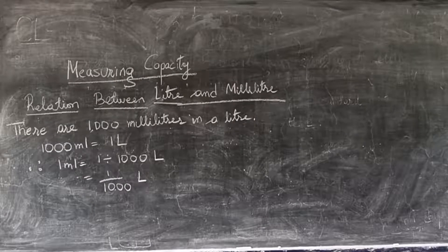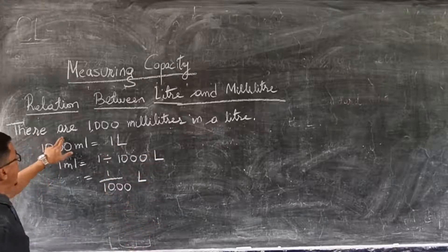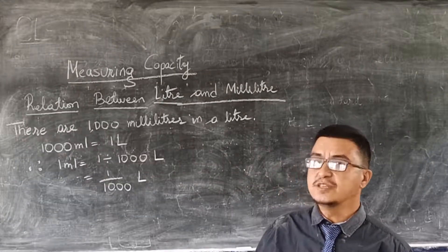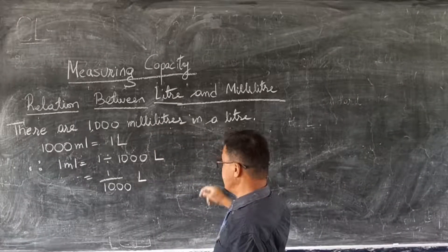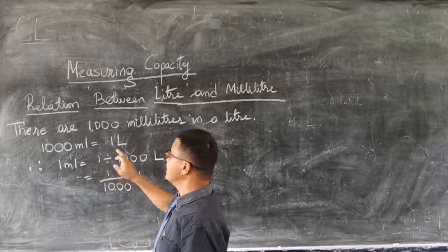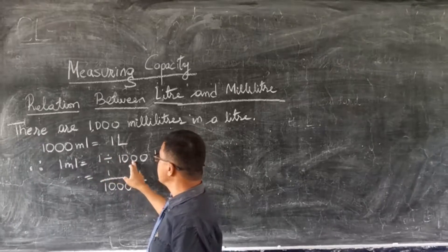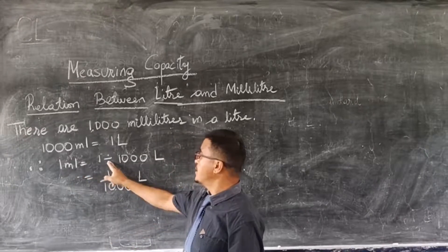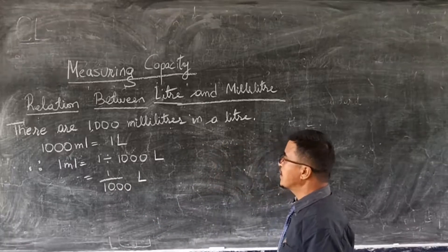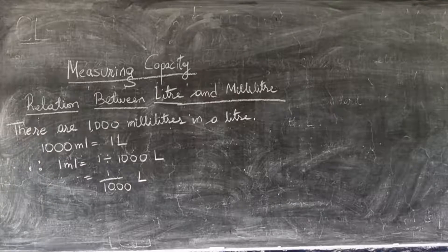Now we are going to learn about the relation between litre and millilitre. There are 1000 ml in a litre. So 1000 ml is equal to 1 litre. Therefore, 1 ml is equal to 1 divided by 1000 litre. Remember that there are 1000 ml in a litre.